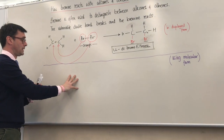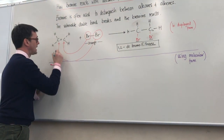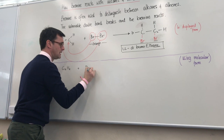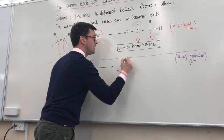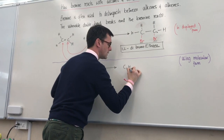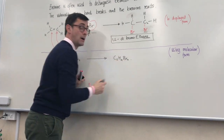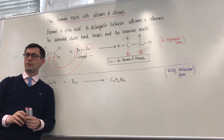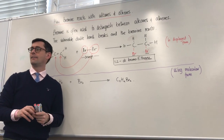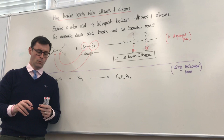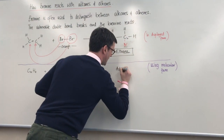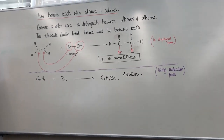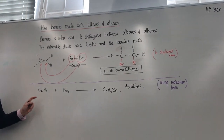Looking at the molecular formula: we start with ethene, which has two carbons and four hydrogens, reacting with bromine (Br2). The product is C2H4Br2 — 1,2-dibromoethane. What's really interesting is that we start with two materials and end up with one. We call this type of reaction an addition reaction. We've added bromine to the alkene, and that's why it changed color.